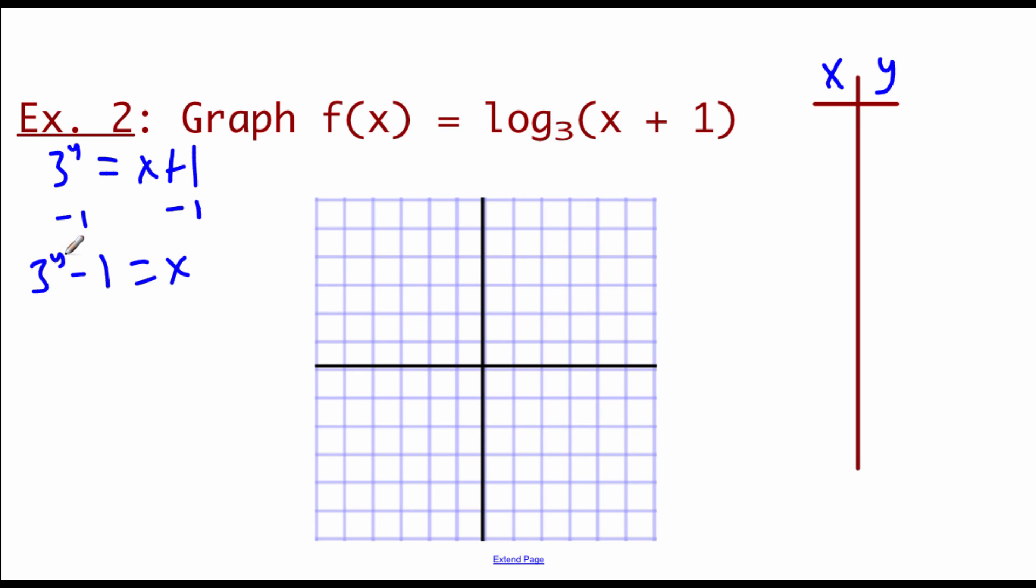I'm going to plug in values for y and get back answers for x. If we plugged in 0 for our y value, 3 to the 0 power is 1, and 1 minus 1 is 0. So we've got the point 0, 0, and I'm going to go ahead and plot that out right away. If we plug in a value of 1, 3 to the first power is 3 minus 1, we get 2 as our x value. If we plug in 2, 3 squared is 9 minus 1 is 8, but again this one doesn't show up on the graph. Let's try negative 1. 3 to the negative first power would be 1 over 3, and then if we subtract 1 from that, we get negative 2 thirds. If we plug in negative 2, 3 to the negative second power is 1 ninth, and if we subtract 1 from that, we get negative 8 ninths.